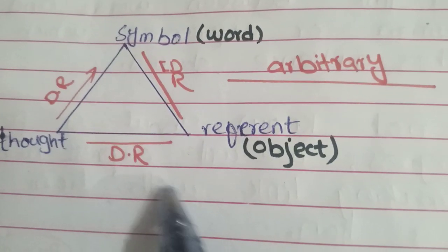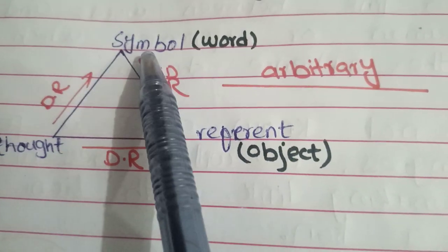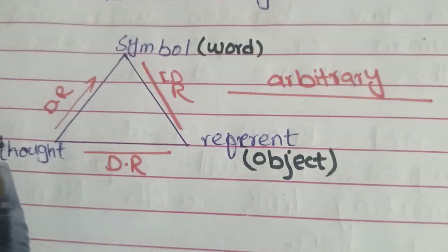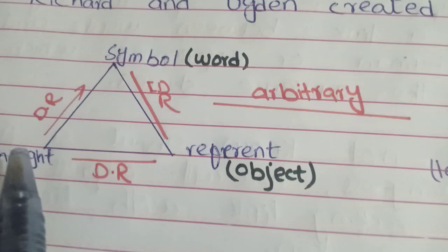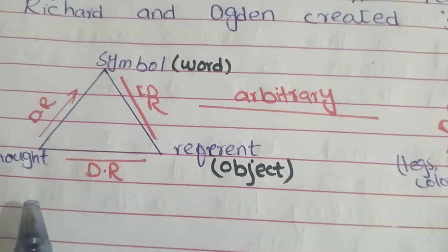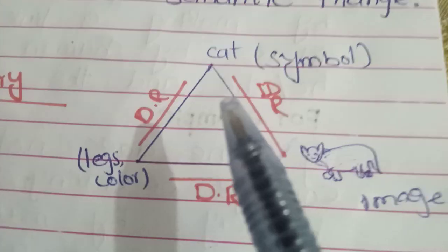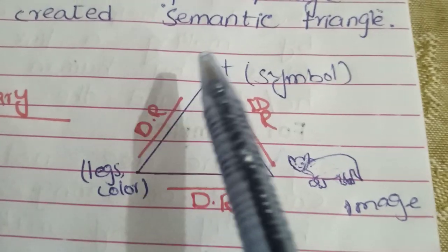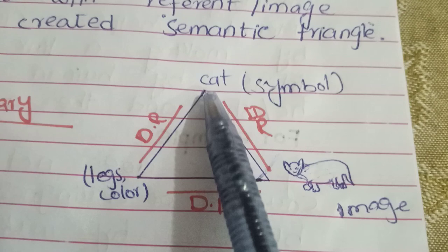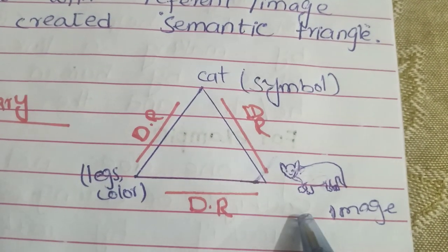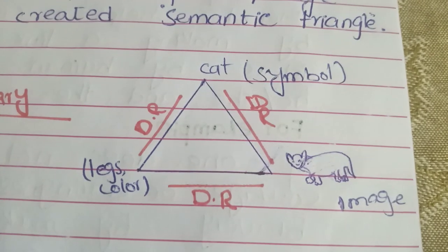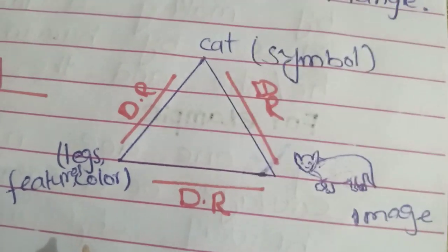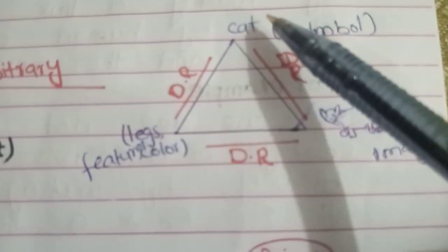The semantic triangle shows at one corner the symbol, at another corner the object or referent, and at the third corner, our thoughts about the object in our mind. Let's take the example of 'cat.' At one corner we take the symbol — the word 'cat,' the graphical representation of cat. At another corner we take the image of the cat, the actual object. At the third corner we take our thoughts — the color, legs, features, sound, and so on.